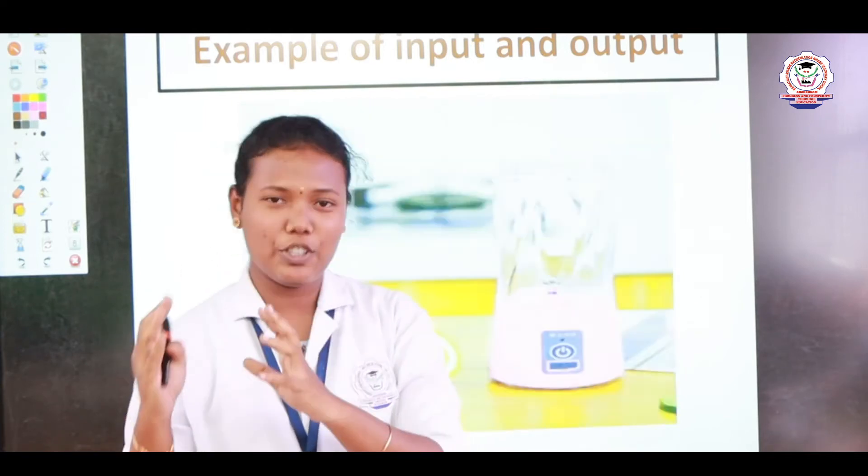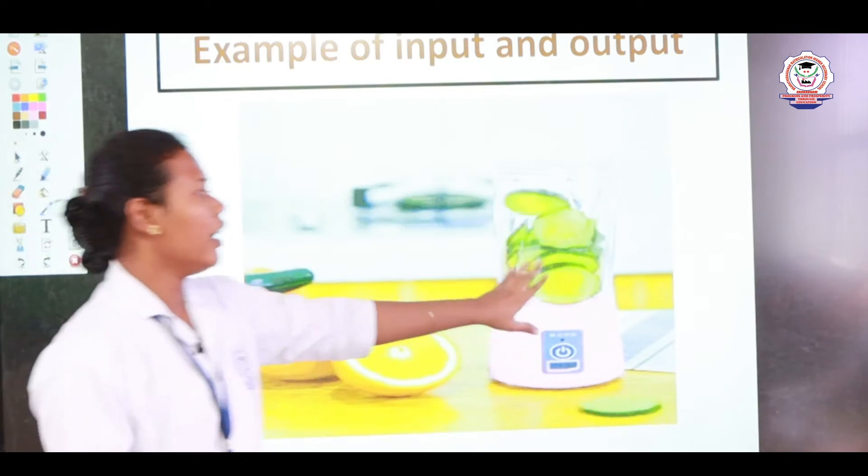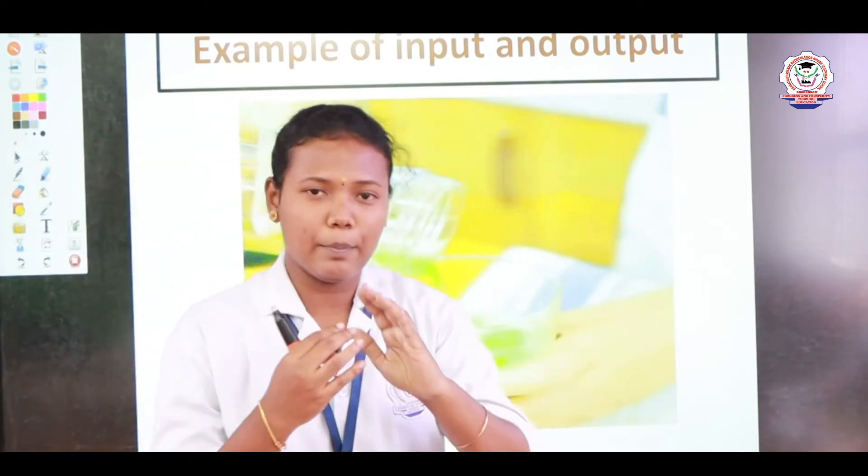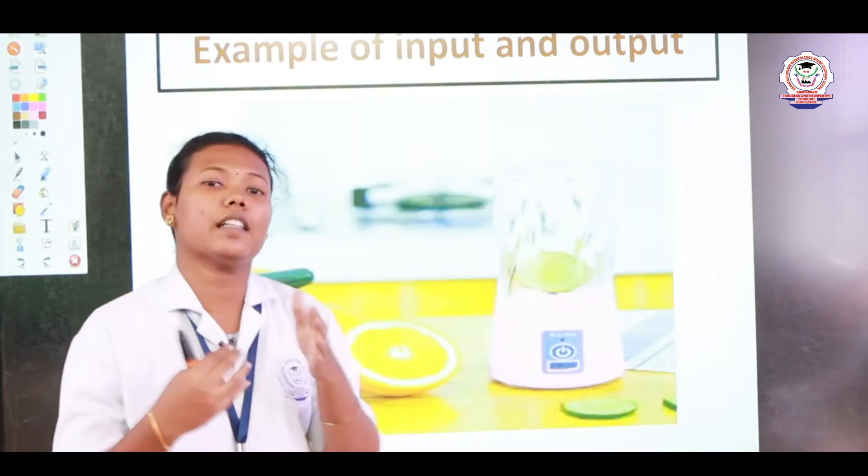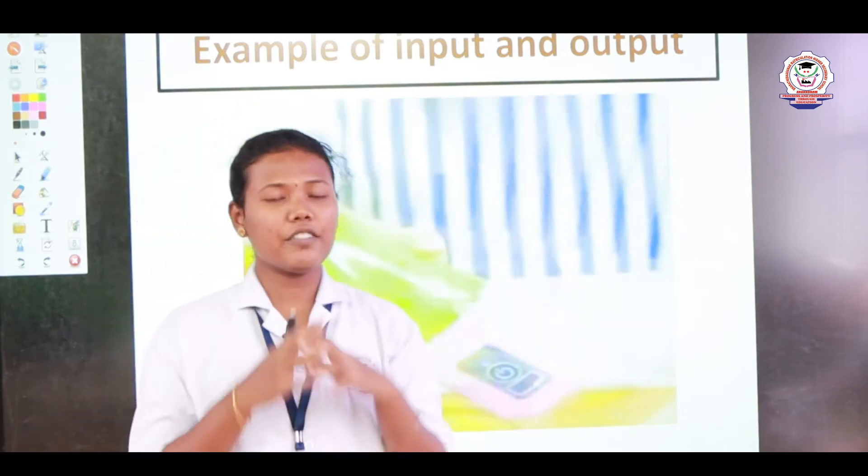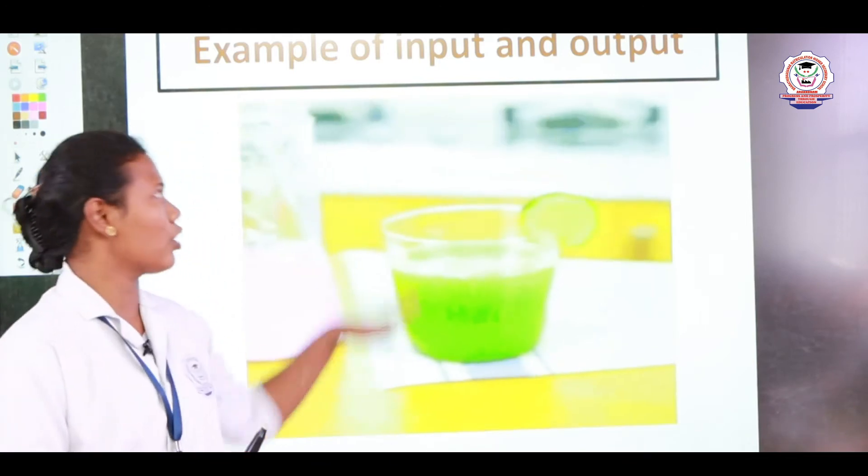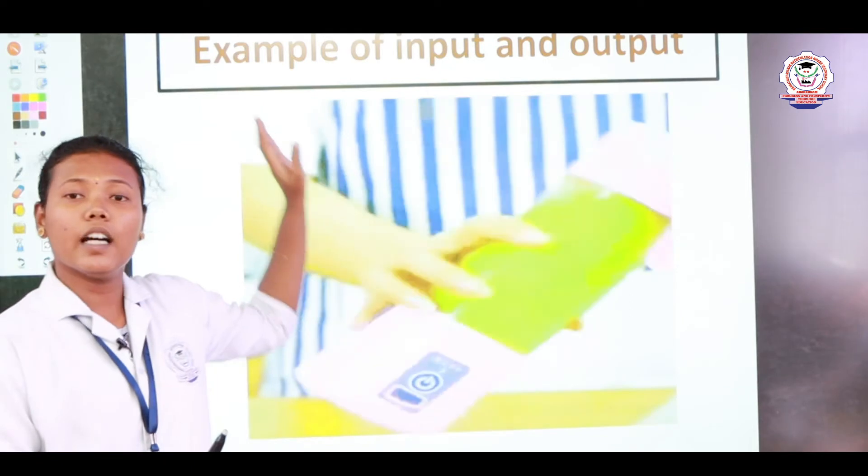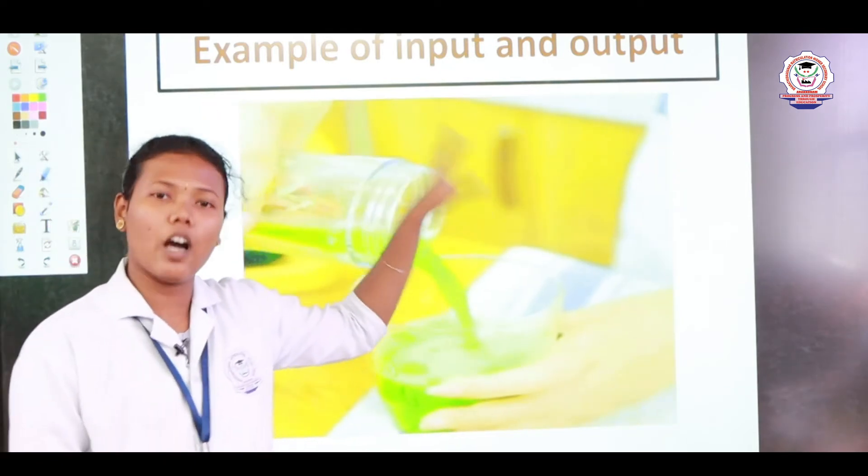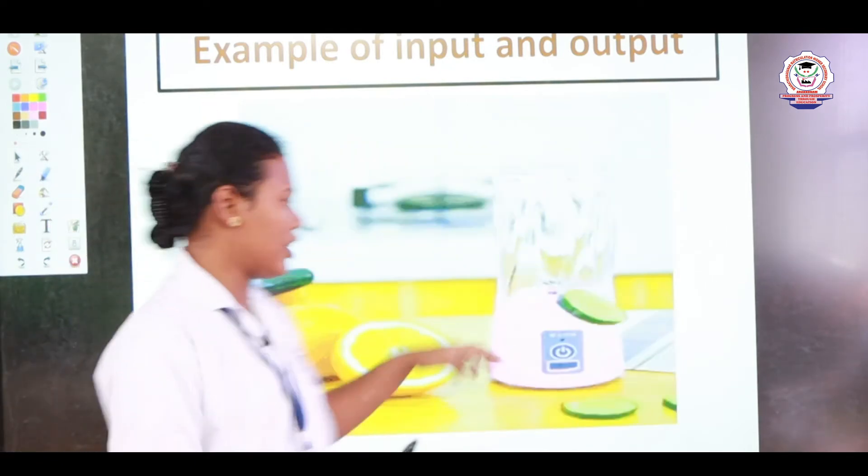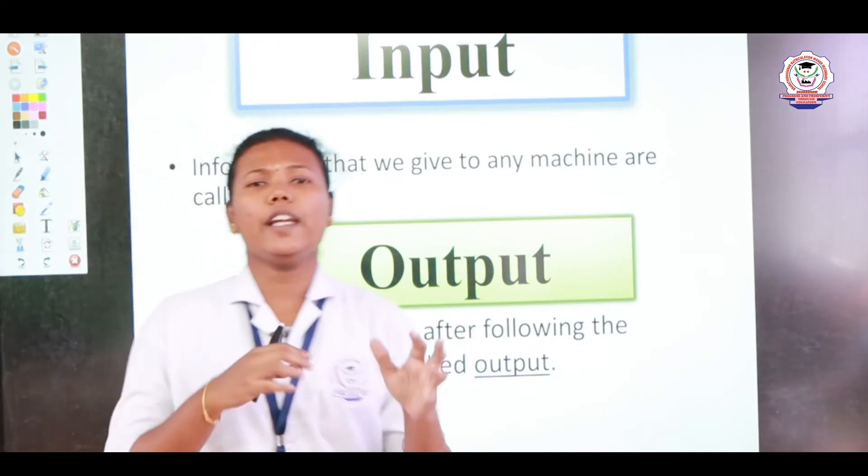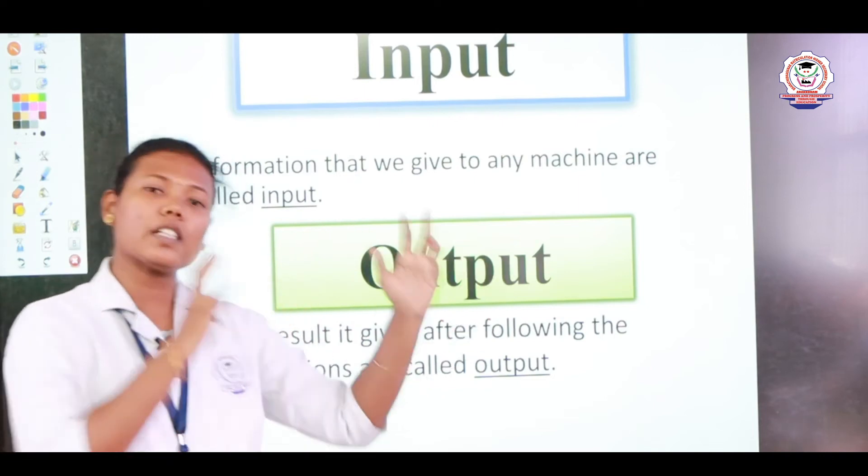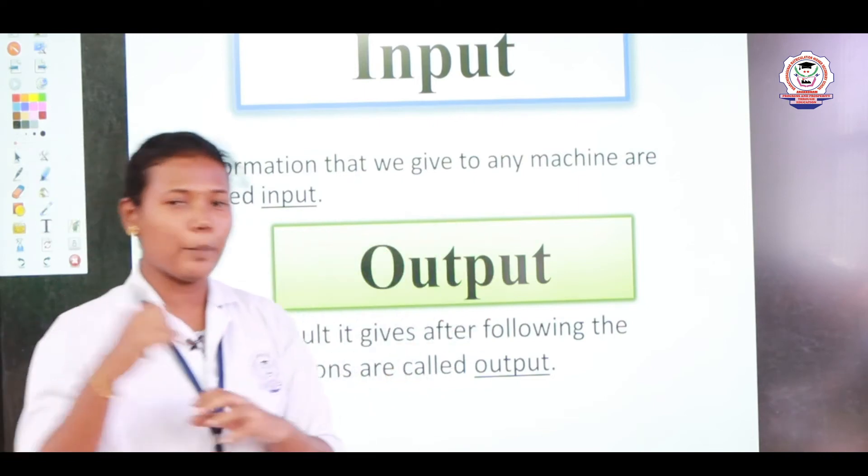The output will be a fresh juice. See here, in this machine we put some fruits, it works for some time, and as a result, as output, it gives us fresh juice. This is called input and output. I have taught you the example of input and output. But in our session, we have a few input devices and output devices. Some are input devices in a computer, some are output devices in a computer.